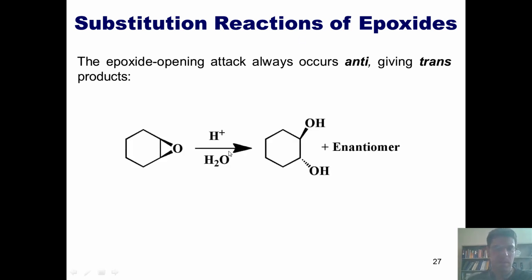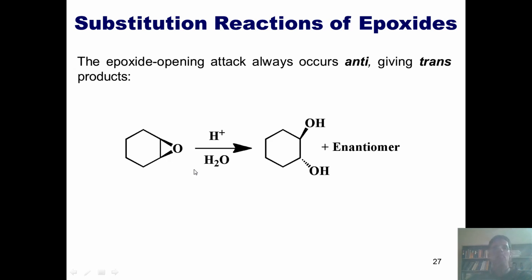For instance, if I took this epoxide and treated it with acid, the oxygen would get protonated to give an OH+ here, and then my water nucleophile would come in. As it comes into the lower carbon and pushes these electrons up into this oxygen, it has to come from the backside. After it gets deprotonated and thereby neutralized, I end up with these two OHs being trans to each other.